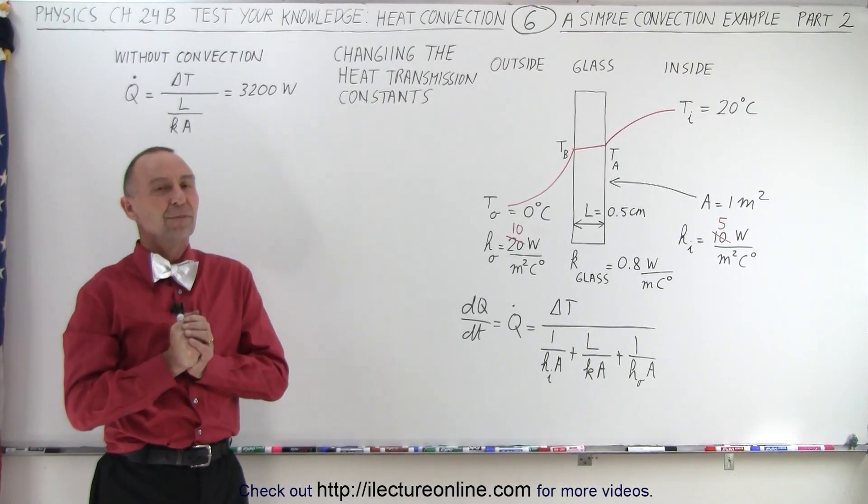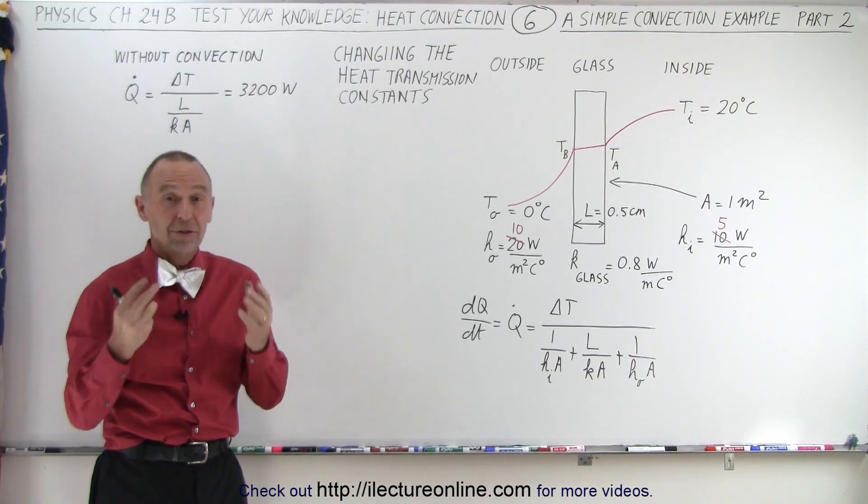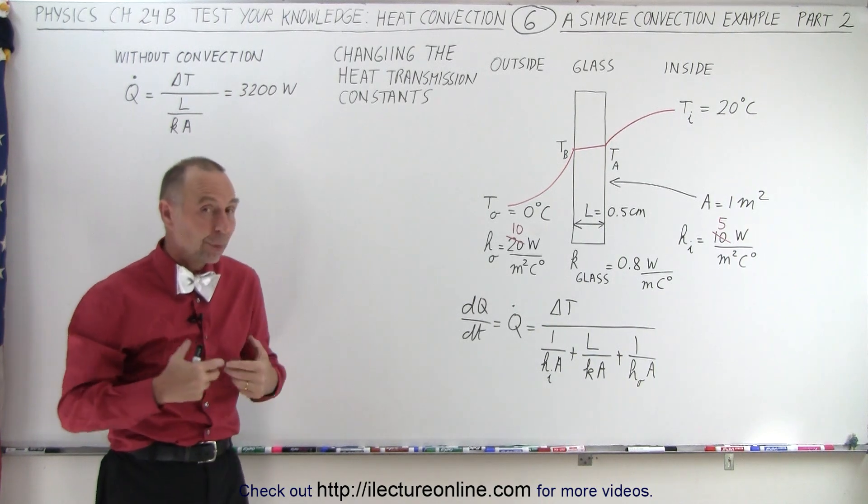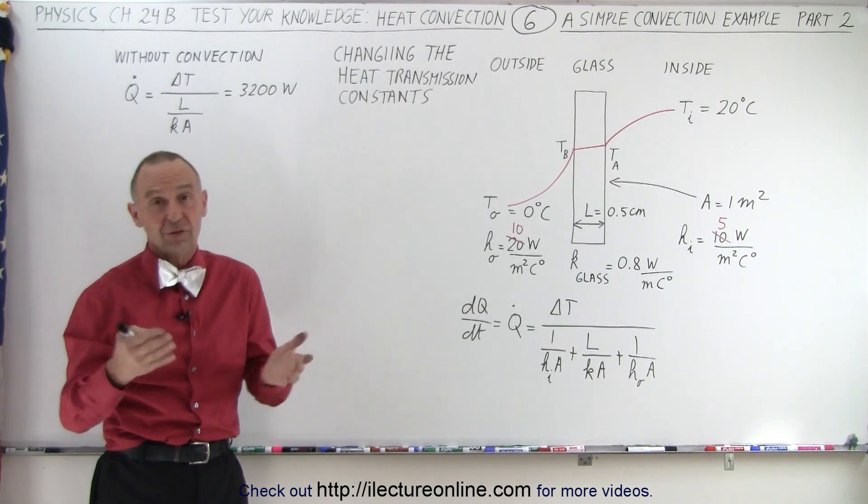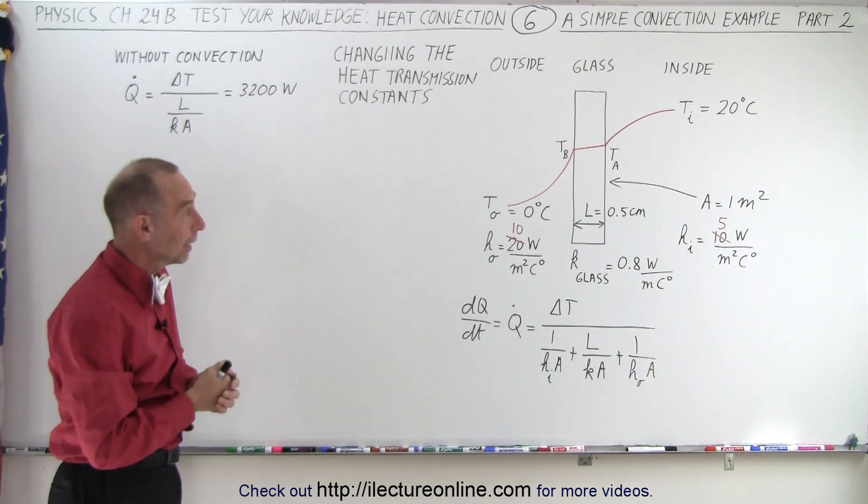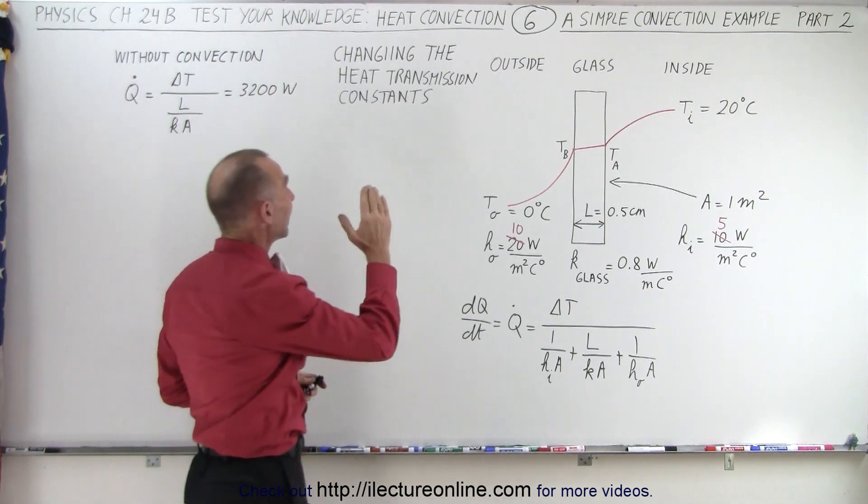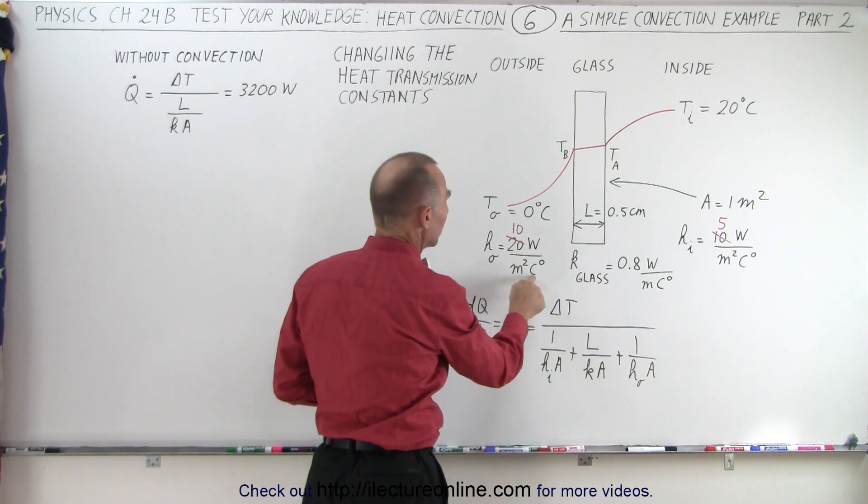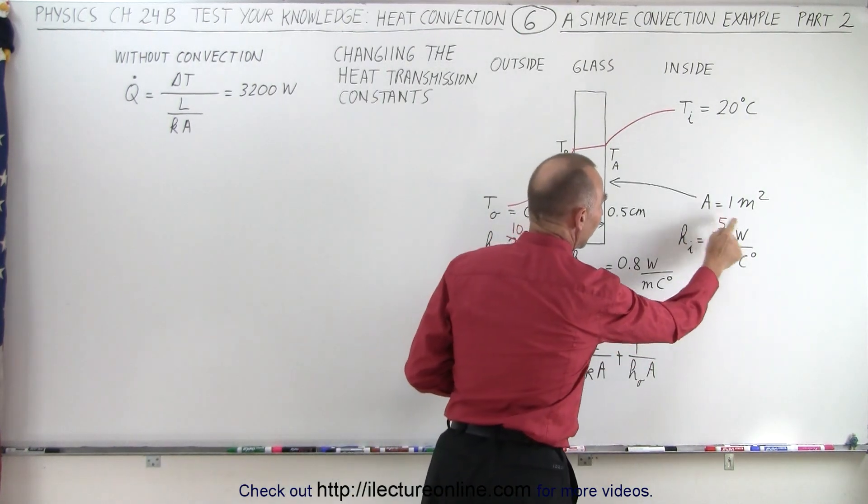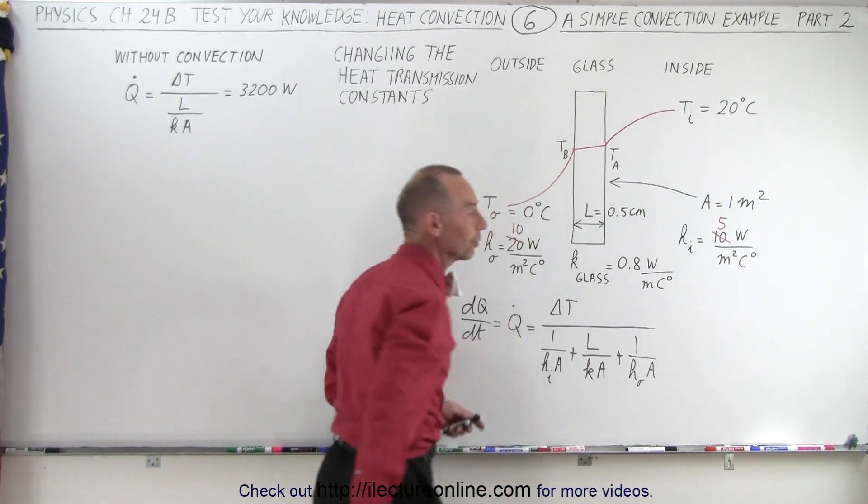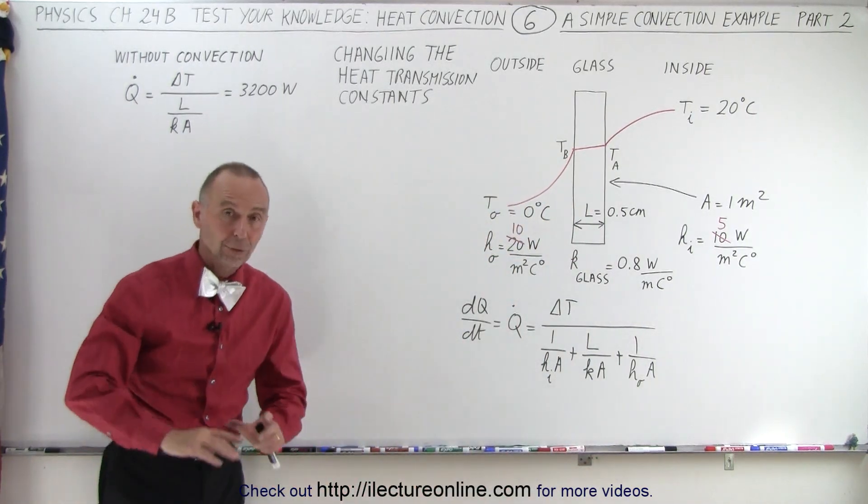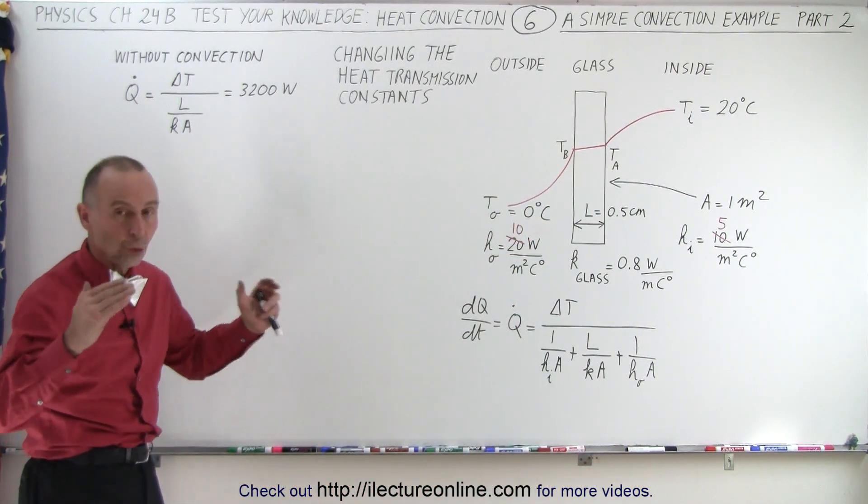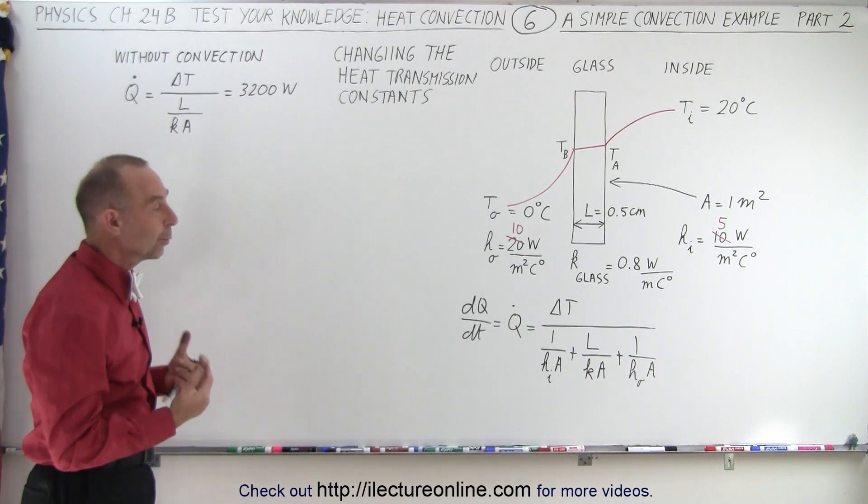Welcome to our lecture online. Just so we can gain a better conceptual understanding of what convection does to heat transfer, let's say through a window, let's now change the heat transmission constants from 20 to 10 watts per square meter per centigrade degree on the outside and from 10 to 5 watts per square meter per centigrade degree on the inside. Again, those are well within the norm values and let's see what that does.